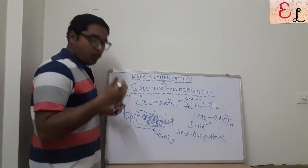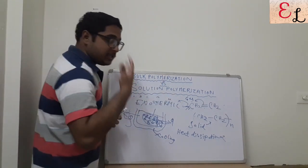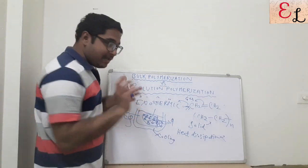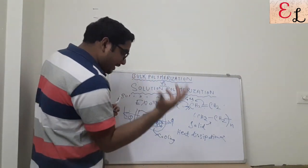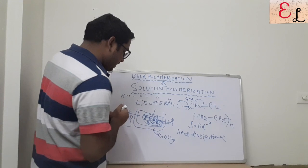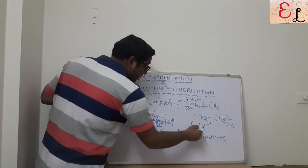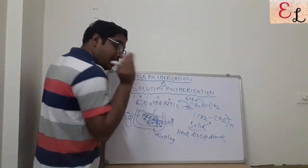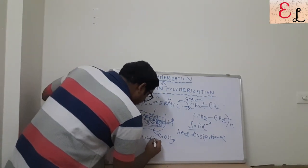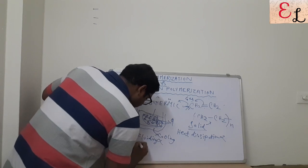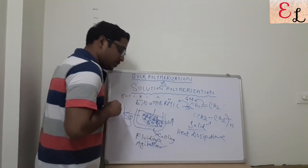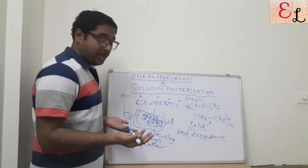Coming to the second point — agitation. Polymerization requires constant agitation of the system to maintain homogeneity throughout the polymer, so that everywhere the polymer has equal concentration. In bulk polymerization, since only polymer is present, it loses fluidity as it solidifies, and the agitation becomes very difficult. So this is another disadvantage of bulk polymerization: first, heat will not get dissipated; secondly, agitation will become a big headache.